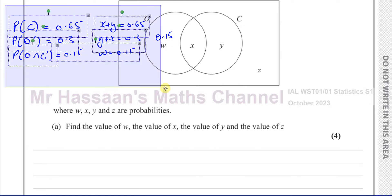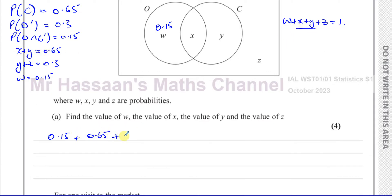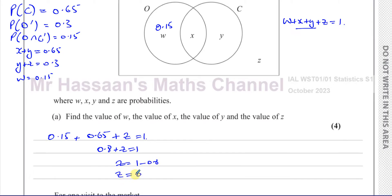We also know that W plus X plus Y plus Z has to equal 1. So we have 0.15 plus X plus Y, which is the whole of 0.65, plus Z equals 1. So 0.8 plus Z equals 1, which means Z equals 1 minus 0.8. So Z equals 0.2. Now we have W equals 0.15 and Z equals 0.2. We still need to find X and Y.